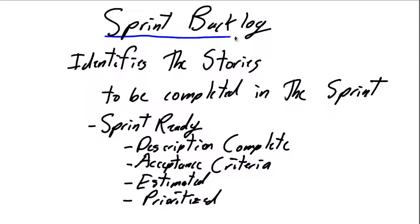The Sprint Backlog, typically associated with Scrum project delivery, identifies all of the stories, the pieces of work, the business functionality that's going to be delivered in a Scrum Sprint in a two to four week development cycle.